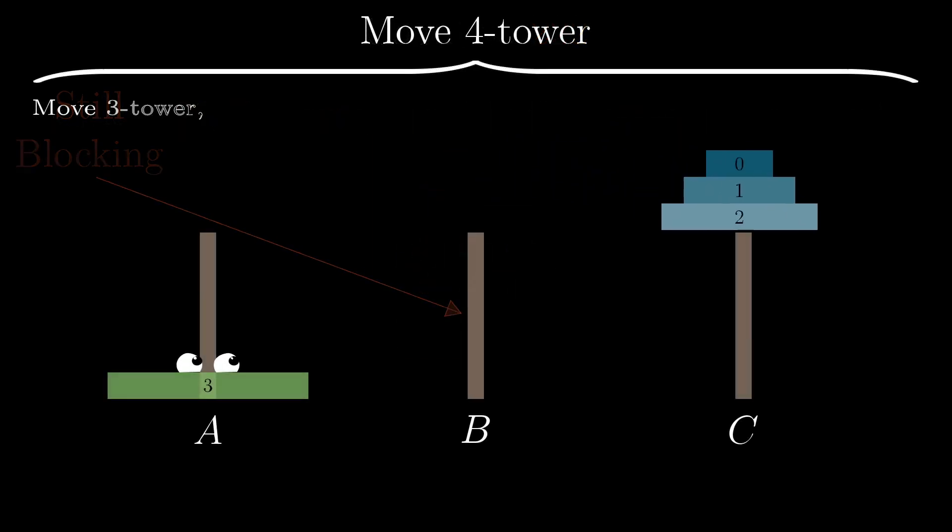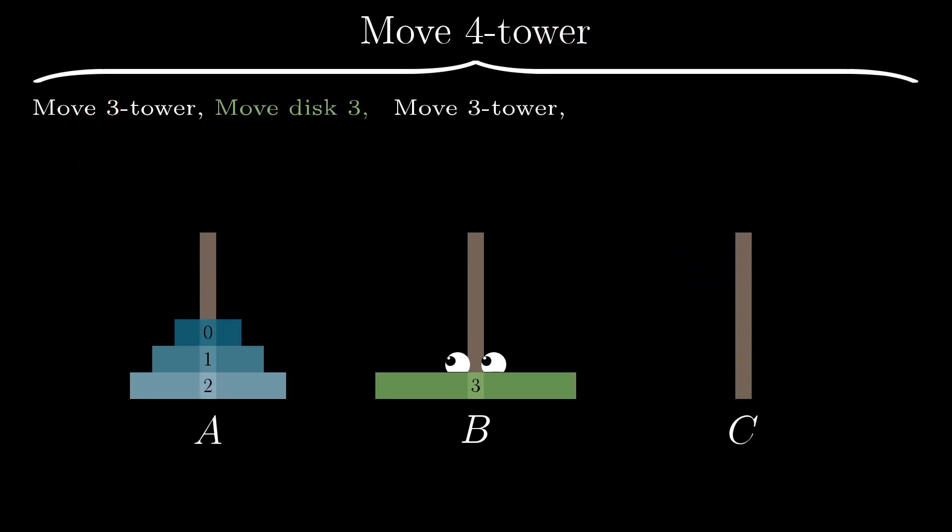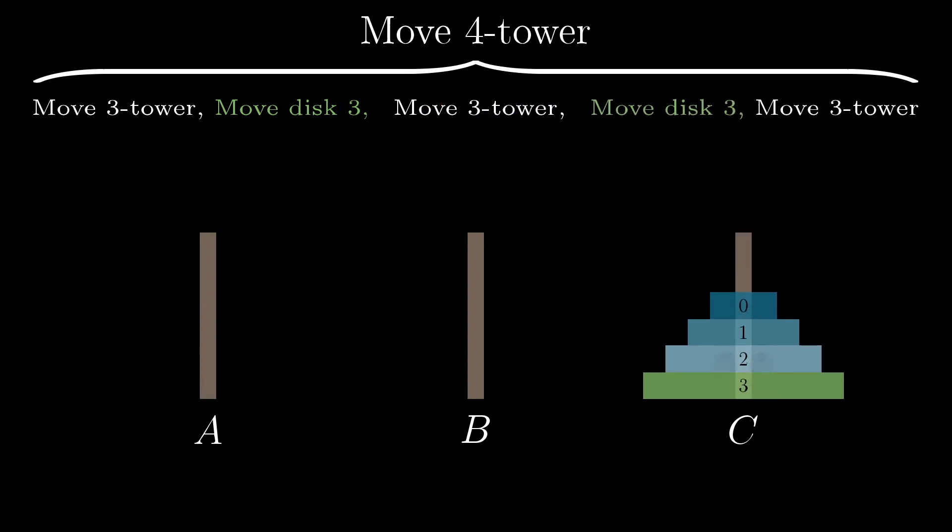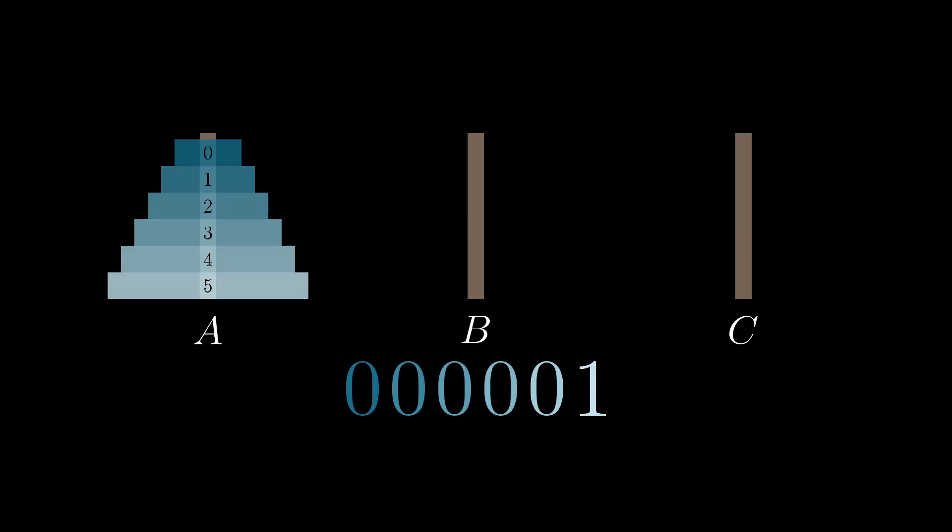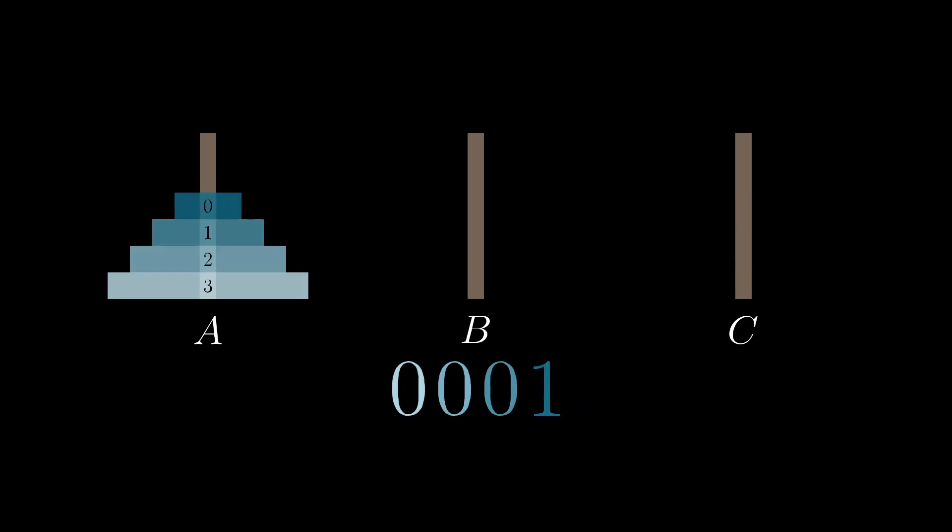But this is the pattern that we just saw with the constrained towers of Hanoi. Do a subtask, make some kind of larger movement, do a subtask, make that same larger movement, then do the subtask a third time. So just like binary counting mirrors the solution to the unconstrained towers of Hanoi, counting in ternary is going to mirror the recursive pattern for solving the constrained towers of Hanoi.